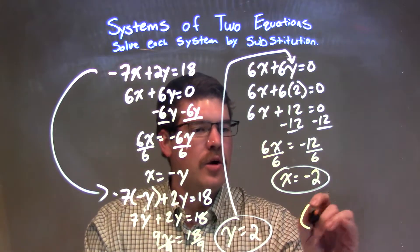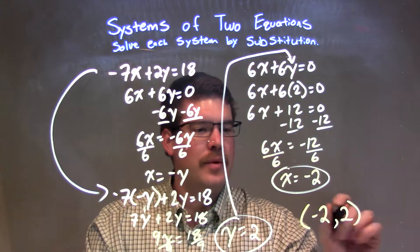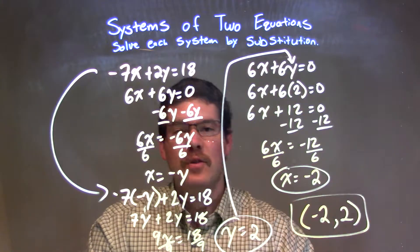Either way, our coordinate point is negative 2 comma positive 2, and we combine them together, and that is our final answer.